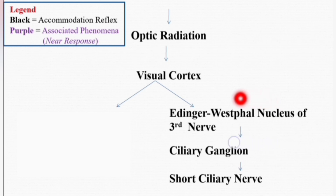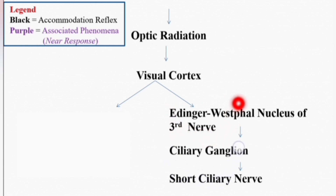From the visual cortex, the impulses go to the Edinger-Westphal nucleus. This Edinger-Westphal nucleus is the parasympathetic nucleus of the third nerve, or oculomotor nerve. It sends impulses to the ciliary ganglion, and from the ciliary ganglion, parasympathetic impulses go to the short ciliary nerves.